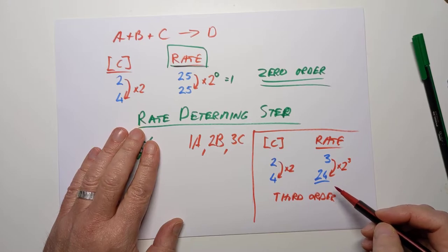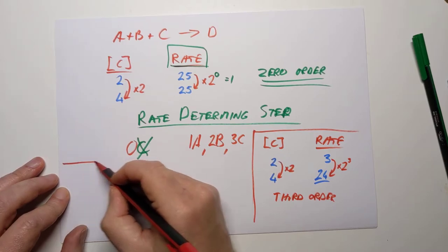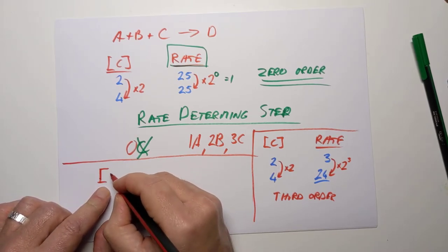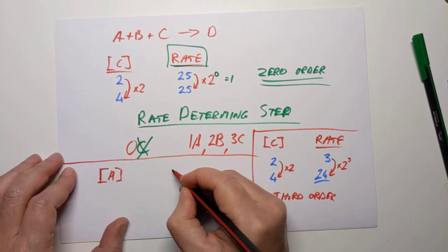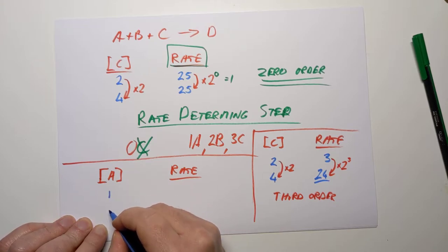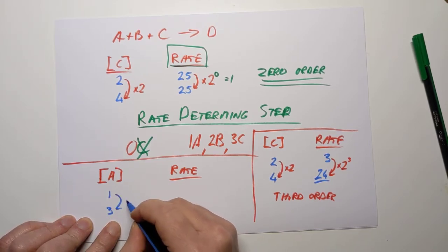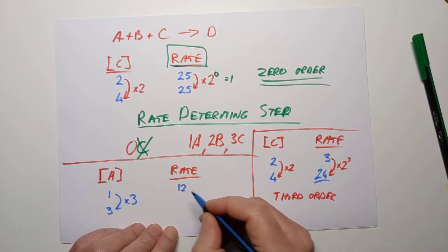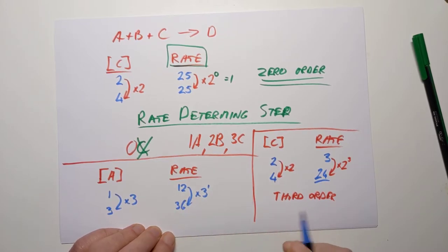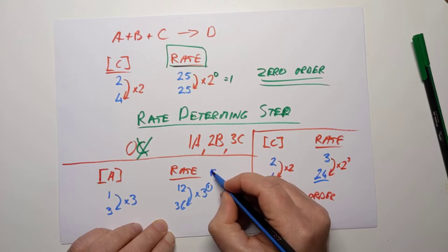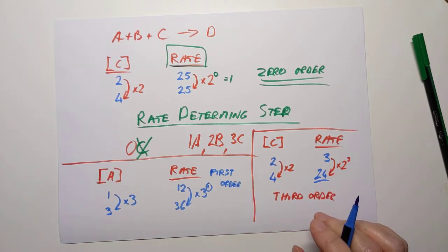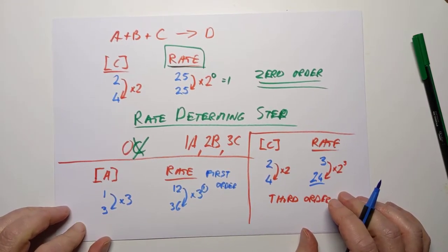I've seen the SQA do slightly sneakier things — for example, with a first-order reaction for A, going from a concentration of 1 up to 3 rather than doubling. That's multiplying by 3. If it's first order, you multiply by 3 to the power of 1, so a rate of 12 would become 36. I've seen them use different multipliers occasionally, and there's a maths trick I'll show you very soon.